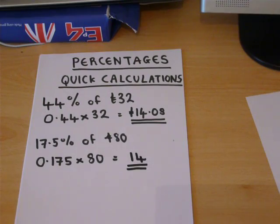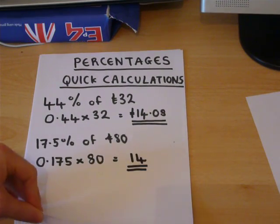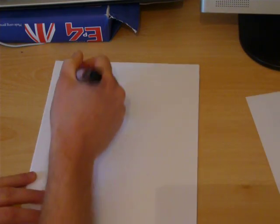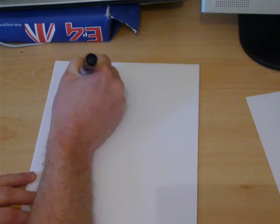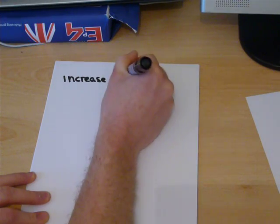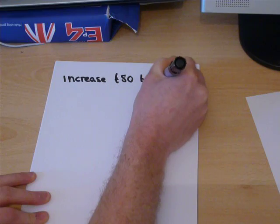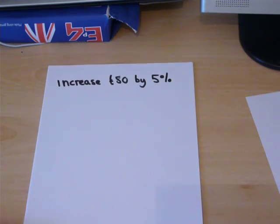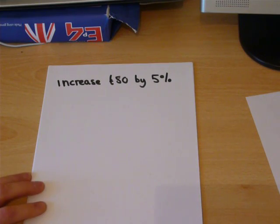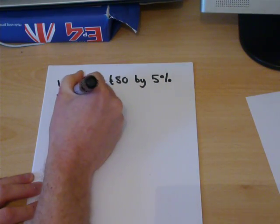There are another number of shortcuts which is worth knowing. Suppose we want to increase 80 pounds by 5%. The useful shortcut is to know some multipliers. Now, 1.05,